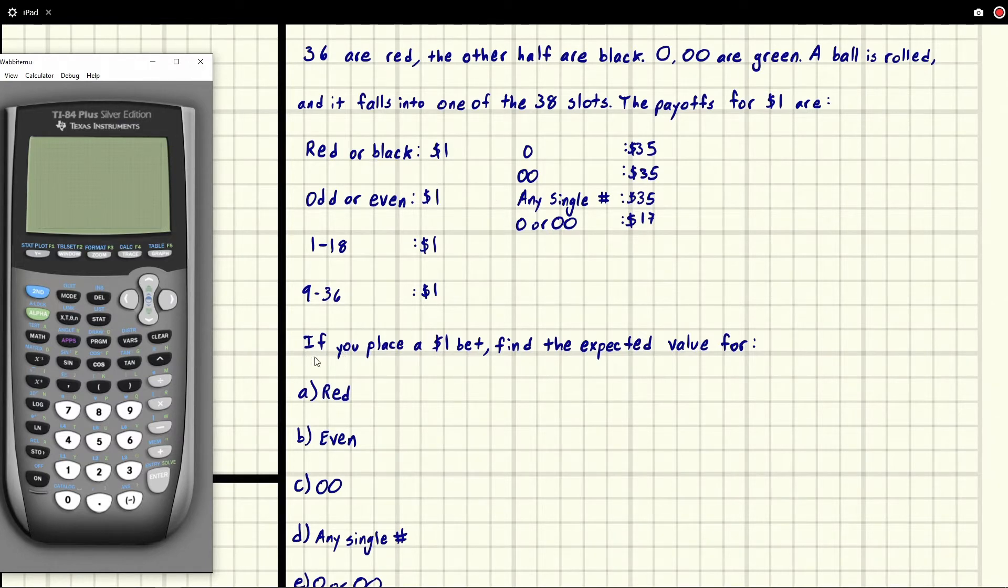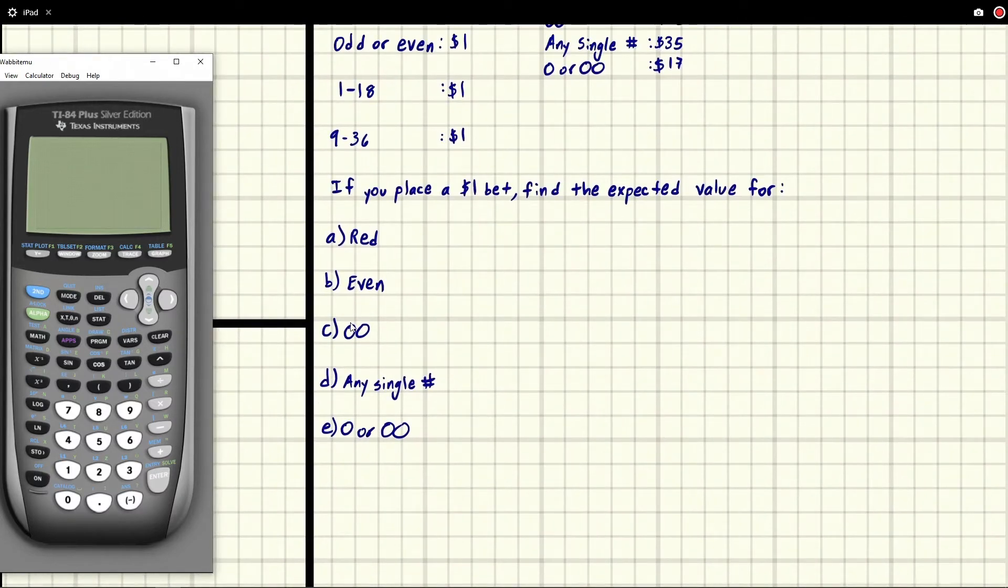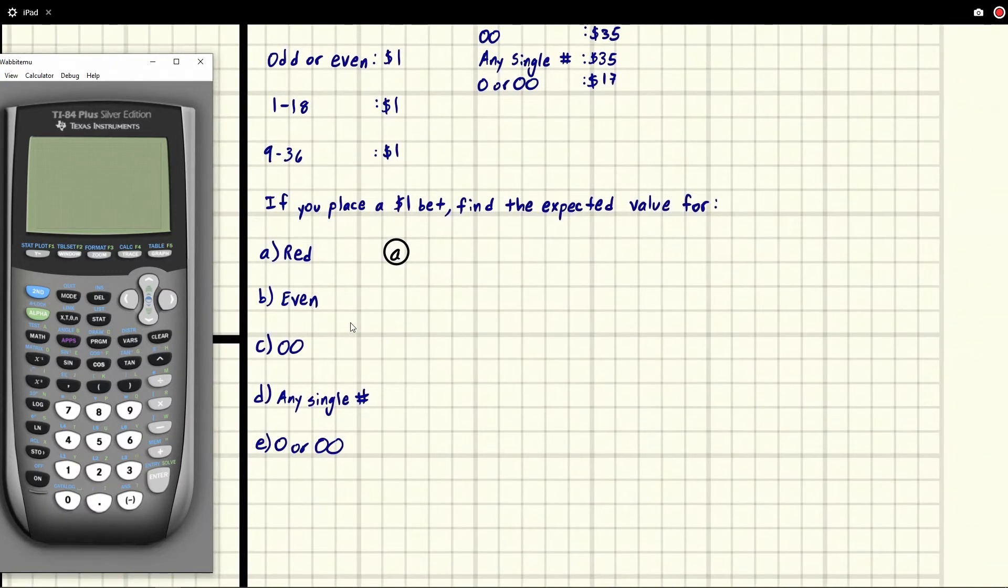Okay, let's dive right in here. All of these are going to follow a similar pattern. Let's do part A first. What I mean by a similar pattern is we're going to make a table for each of these to find the expected value. That's the pattern.